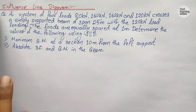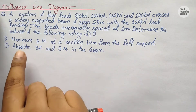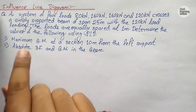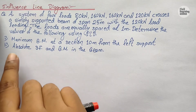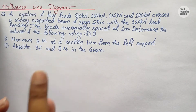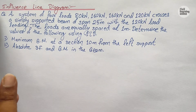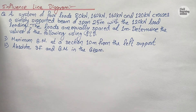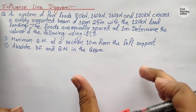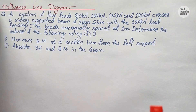The second question is to find the absolute shear force and bending moment in the beam. Absolute bending moment means the maximum of the maximum bending moments, and absolute shear force means the maximum shear force which occurs at the support. We will go through both questions in this video. Let us first draw the diagram and then solve.